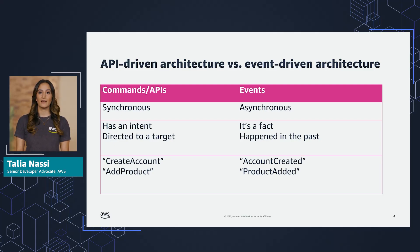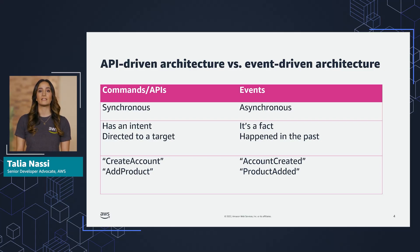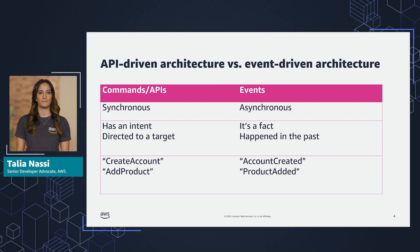An event is something that happened. Maybe a new file has been created, maybe an exception or error occurred, maybe a new customer has been created in your system. It tells you a fact. Events are immutable, which means they cannot be changed. With events, you describe a fact, and others decide what to do with it.